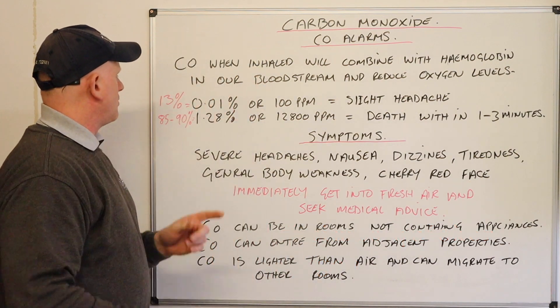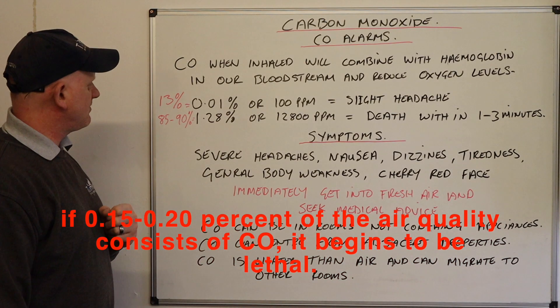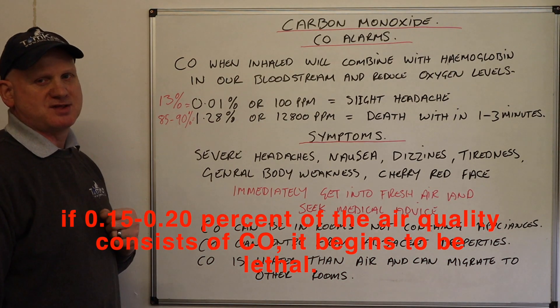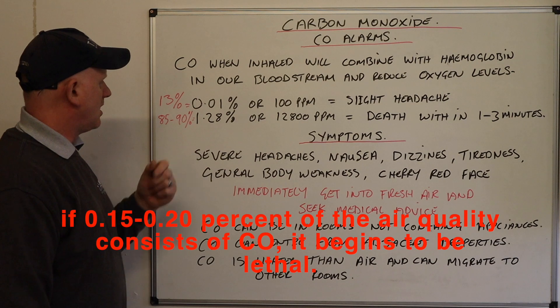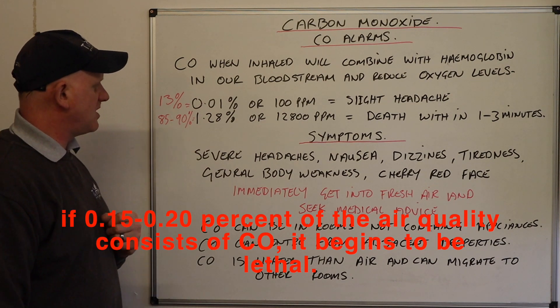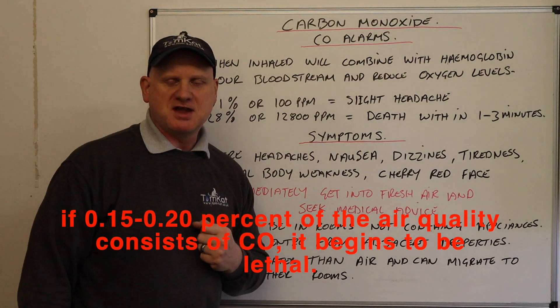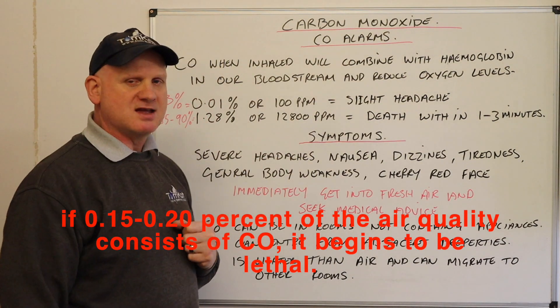If we've got 13% CO in our bloodstream — or 0.01%, or 100 ppm — you're going to get slight headaches. If we've got 85 to 90% CO in our bloodstream, or 1.28%, or 12,800 ppm, we've got death within one to three minutes.